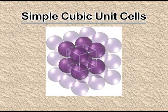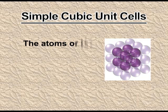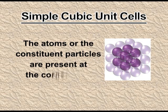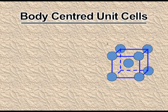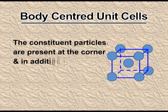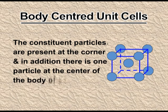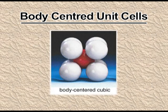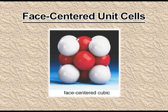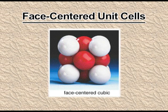Looking at the pictures: in the simple cubic unit cell, atoms are present at the corners only. In the body-centered unit cell, atoms are at the corners and in addition, there is one particle at the center of the body — you can see a red ball in between the white balls. In the face-centered unit cell, particles are at the corners and also at the center of each face.